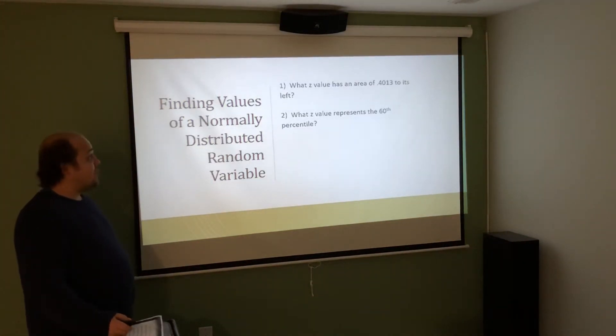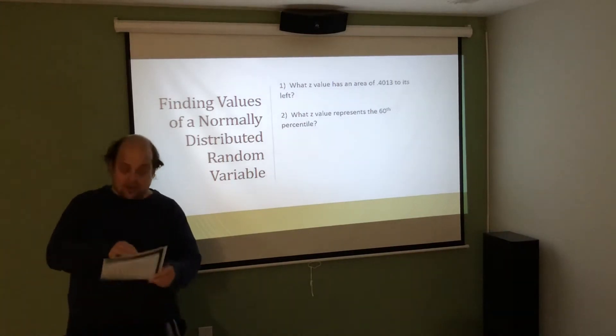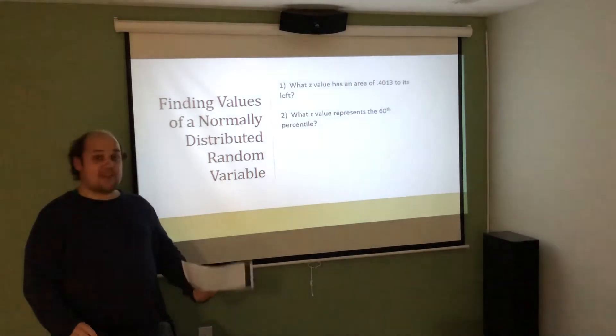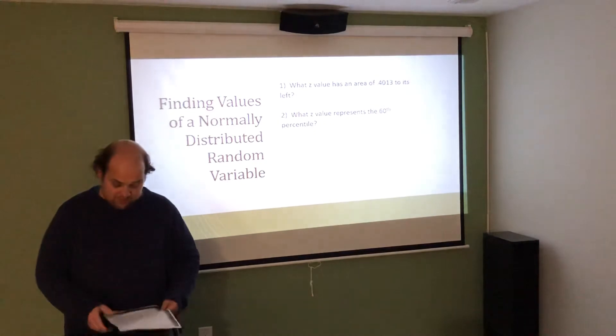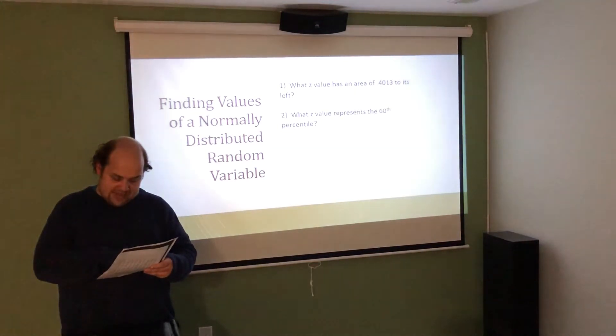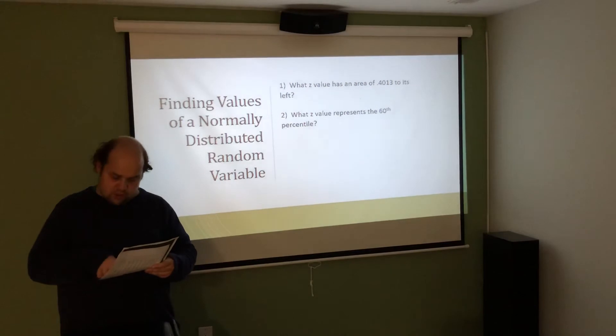All of that said, if I was asked what Z value has an area of 0.4013 to its left, I'd want to look in the middle of the table for 0.4013. I know it's on the negative side because it's less than 0.5. There is an exact table entry of 0.4013, and it occurs at a Z score of negative 0.25.